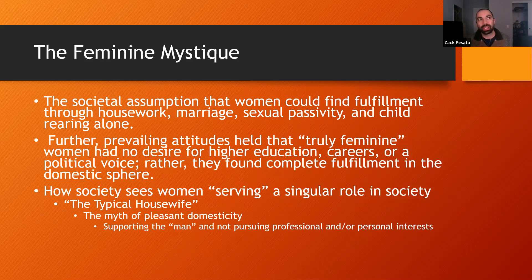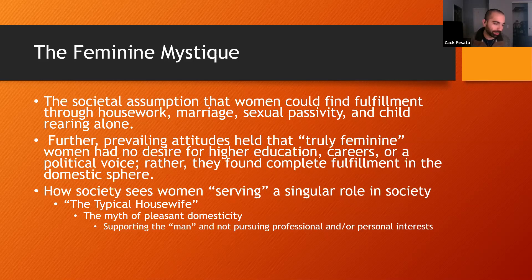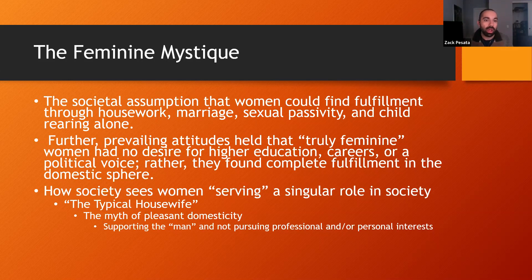The feminine mystique — as a term coined by the book — is defined as the societal assumption that women could find fulfillment through housework, marriage, sexual passivity, and child-rearing alone. If you pause on that, you can clearly see how up to 1963 the feminine mystique was breaking down and addressing gender norms being perpetuated in society. Prevailing attitudes held that truly feminine women had no desire for higher education, careers, or a political voice — rather they found complete fulfillment in the domestic sphere.